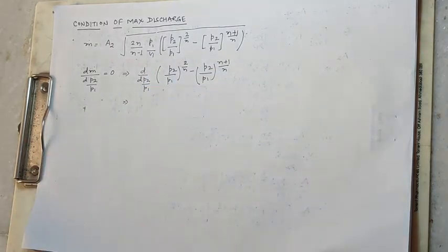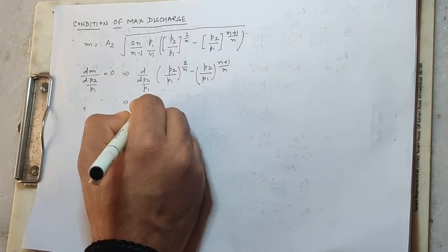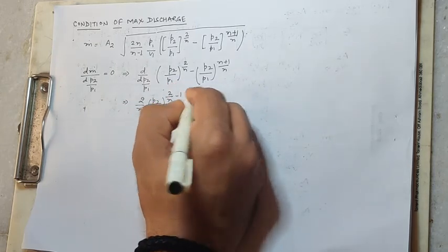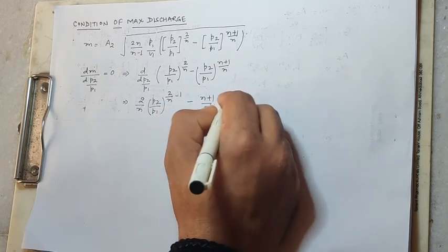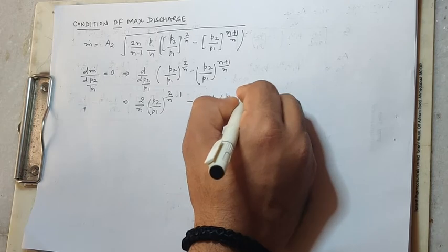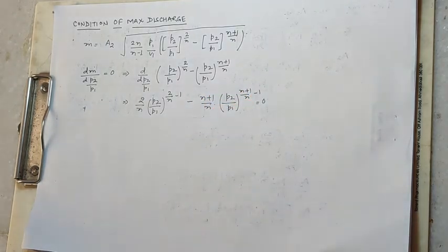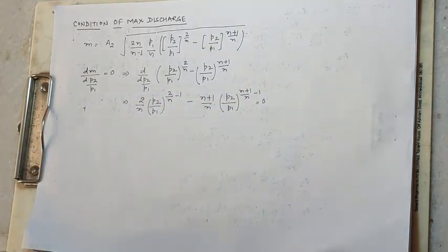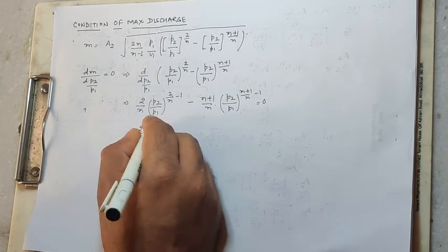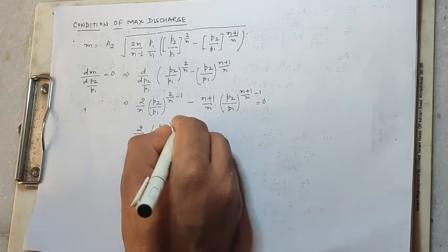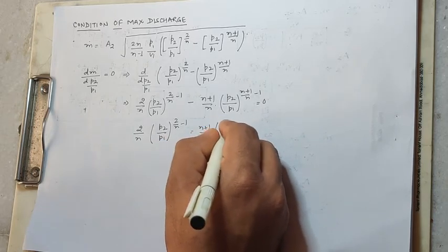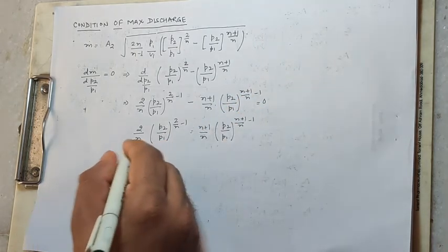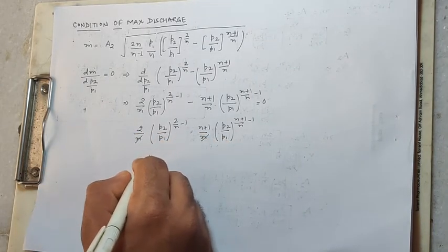Looking at the expression: P2/P1 to the power 2/N minus P2/P1 to the power (2/N minus 1) minus (N+1)/N, multiplied by P2/P1 to the power (N+N-1), is equal to zero. So differentiating and equating, right-hand side gives (2/N) times P2/P1 to the power (2/N - 1) equals (N+1)/N times P2/P1 to the power (N+1)/N, plus 1/N minus 1.